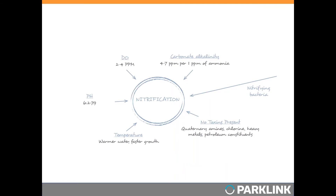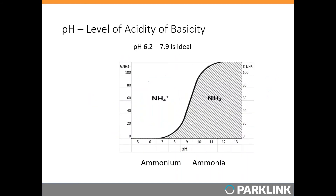The next stop on the nitrification wheel is pH — the level of acidity or basicity in your treatment plant water. Nitrifying bacteria generally work best at a pH of 6.2 to 7.9, with around pH 7.2 being optimal. Ammonia oxidation produces acids, and too much acid dropping the pH to around 5.5 will inhibit further ammonia oxidation, though they can recover. Ammonia-oxidizing bacteria will become dormant or die at pH greater than 8.5.